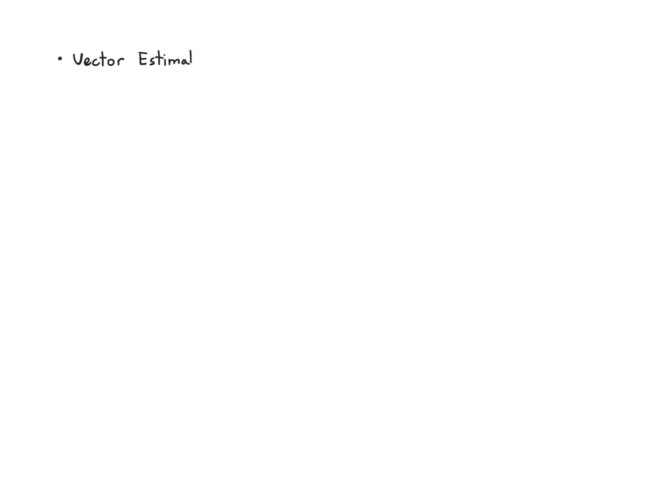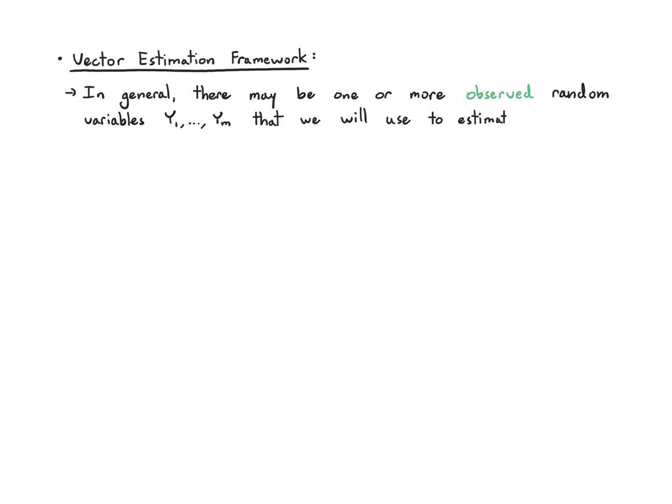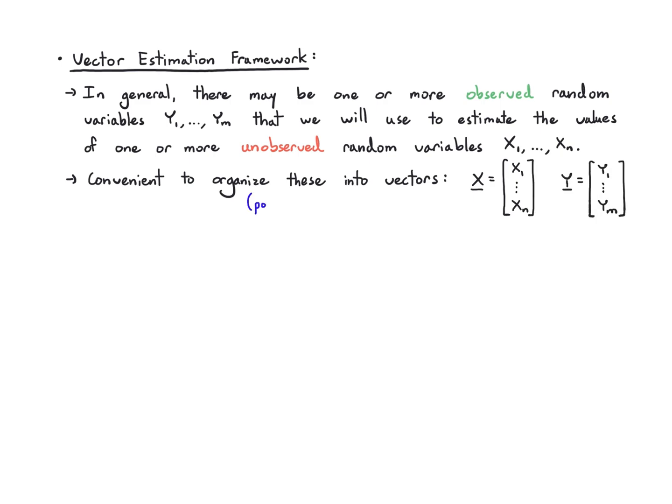In this video we're going to see how to adapt our ideas from estimating scalars to vectors. It makes sense that in many interesting scenarios we'll have more than one observed random variable, y1 through ym, and we'll use those to estimate more than one unobserved random variable, x1 through xn. Usually it's convenient to organize these random variables into vectors, so we have the x vector, which is x1 through xn stacked together as a column, and y is y1 through ym stacked together as a column. The columns are maybe of different lengths, and that's fine.